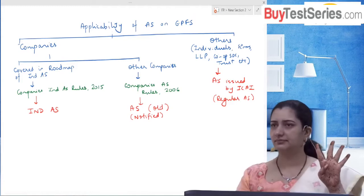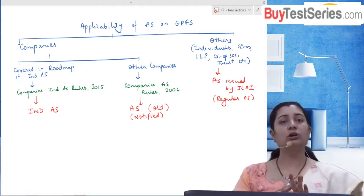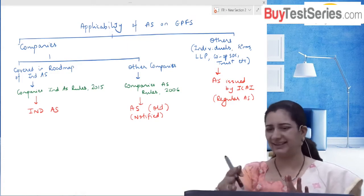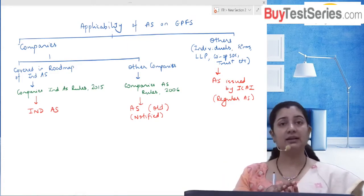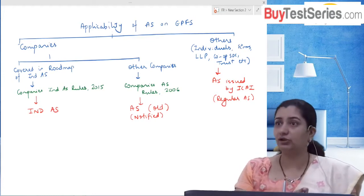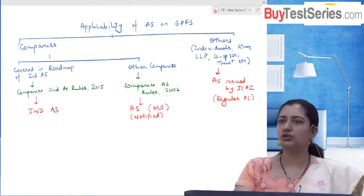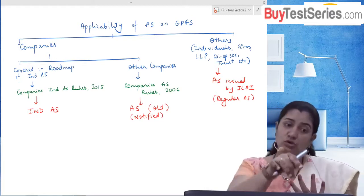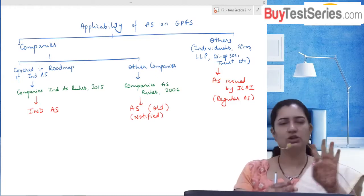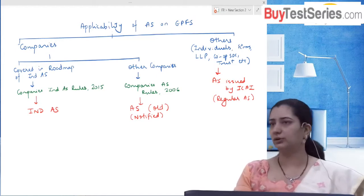We have actually four sets of standards: one, the regular accounting standards issued by the Institute, applicable for all small entities like individuals; two, the accounting standards notified by MCA for companies to follow under 2006 rules; three, Ind AS issued by MCA for those roadmap companies; and four, IFRS. We don't apply IFRS - we apply these three.